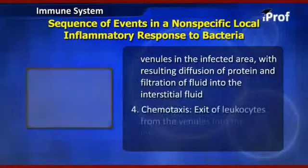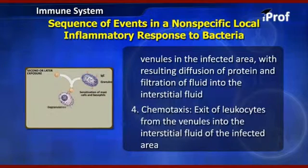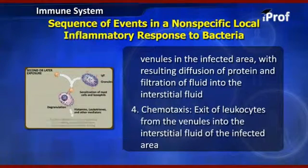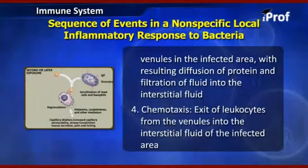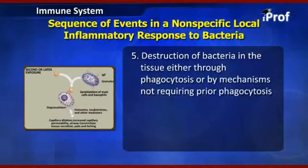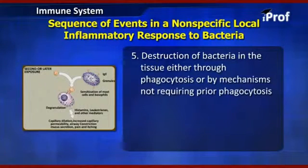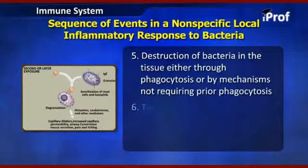Fourth, chemotaxis — the exit of leukocytes from the venules. Next, destruction of bacteria in the tissue either through phagocytosis or by mechanisms not requiring prior phagocytosis. And last, there is repair of the tissue.